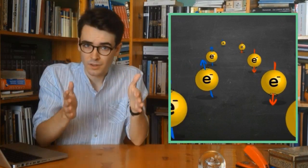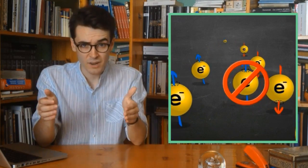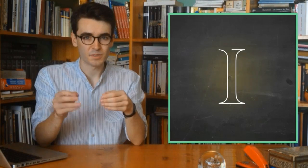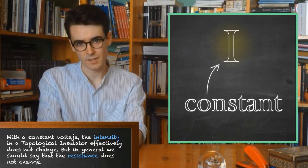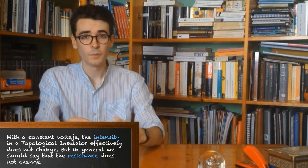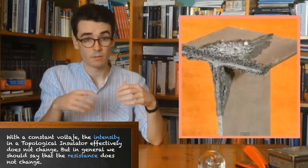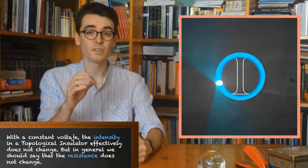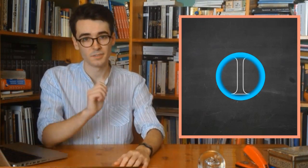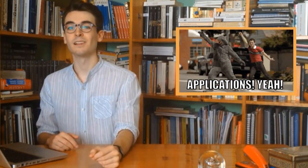In conclusion, we have a material that has electric currents where the electrons cannot change direction. This translates into a current with an intensity that does not fluctuate, a constant intensity. Moreover, even if the material were to be corrupted or contaminated, because of the topological protection, we can ensure that these currents will remain constant. Come on, a material that always has the same intensity? I'm sure it will have great applications in electronics.